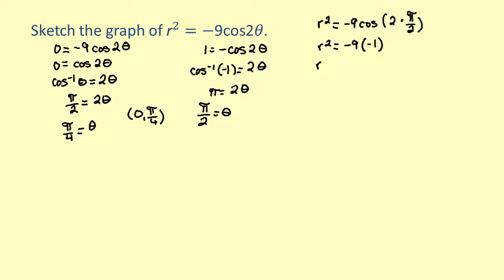Multiplying, we get r squared equals 9. Solving for r, we get r equals 3 or negative 3. For this, we will just use 3. So another point that lies on the graph is 3 pi over 2.